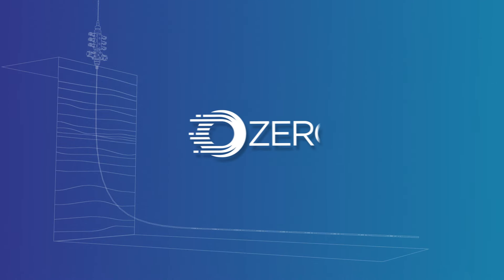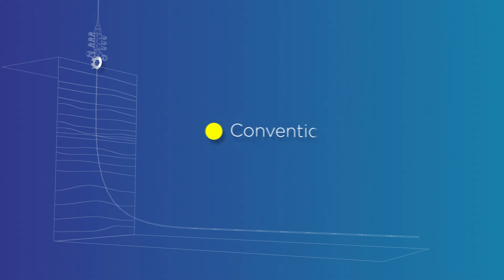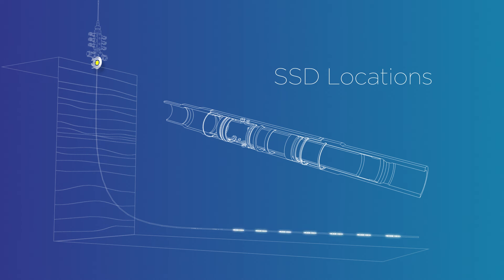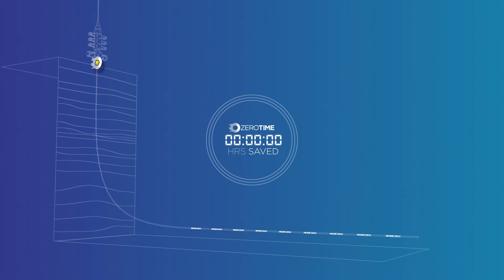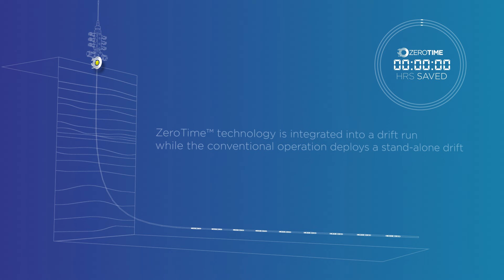Let's now compare a ZeroTime enabled operation to a conventional operation as part of a typical well stimulation programme. This well is a highly deviated producer with multiple sliding sleeves installed. The counter will record the efficiency gained through the use of ZeroTime based on real-life operational sequences and timings. ZeroTime technology is integrated into a drift run while the conventional operation deploys a standalone drift.